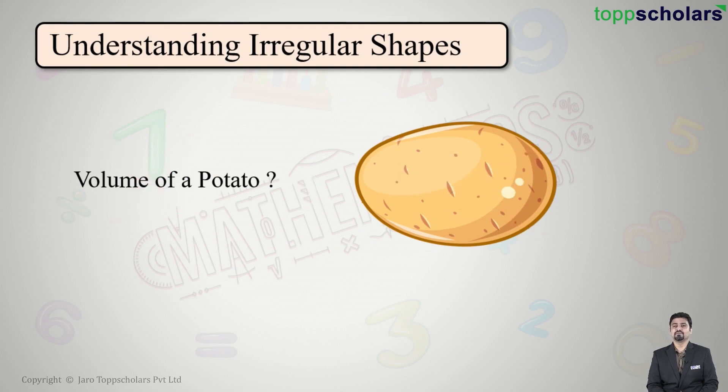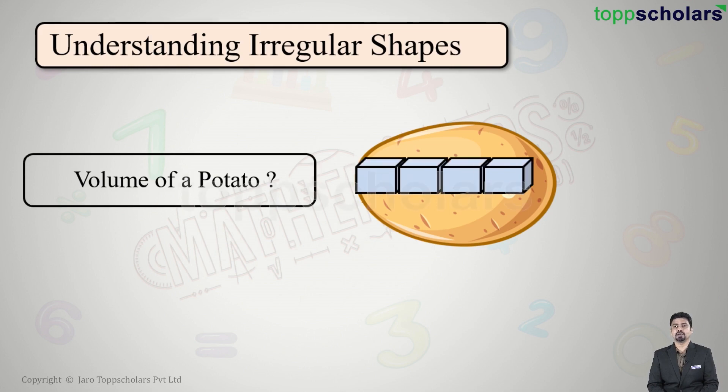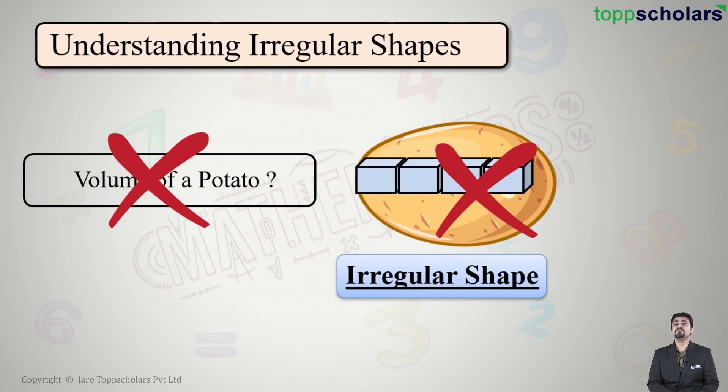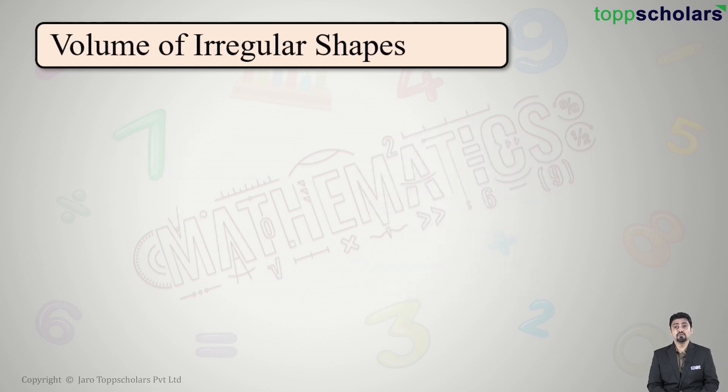Okay, let me try some different method. We had learned that we can find volumes by using unit cubes. So let us start placing unit cubes in this potato. Still, will I be able to find the correct volume of this object? No, even this is not useful because this is an irregular shape and we do not have a perfect formula for finding volume of irregular shapes.